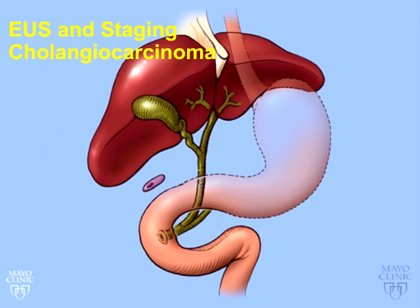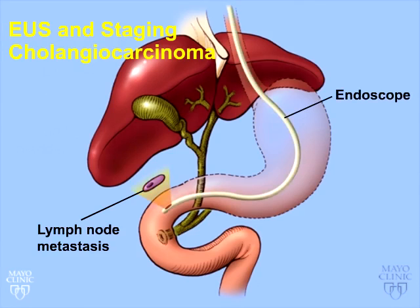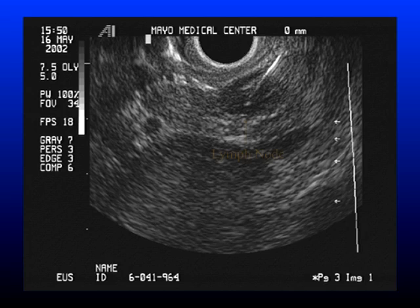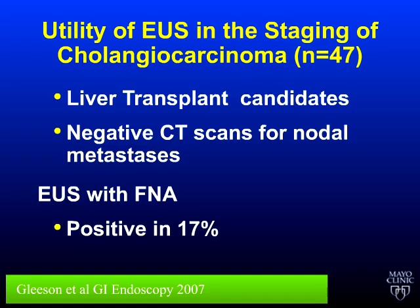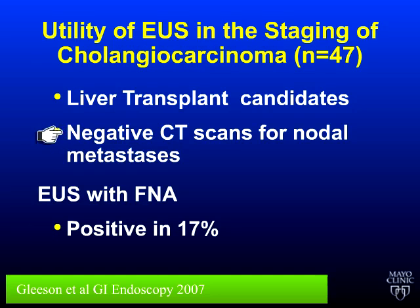EUS is a great tool for staging, particularly looking for regional lymph node metastases. Most patients with perihilar disease will have some lymphadenopathy, especially in the perihilar region, and EUS allows you to biopsy them. There's no reliable tip-off in cholangiocarcinoma — benign-appearing nodes will often have cancer, and malignant-appearing nodes will often be benign. In a paper with colleagues, we found no characteristic lymph node appearance and had to biopsy them all. The positive rate was about 17% in patients we did not think had extrahepatic metastases by CT and MRI.